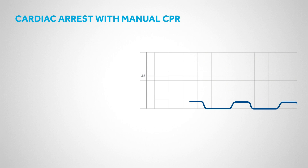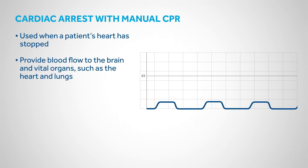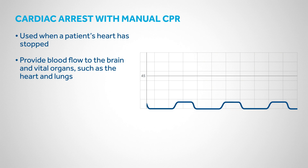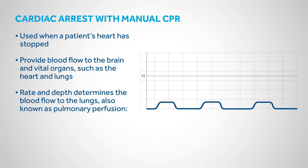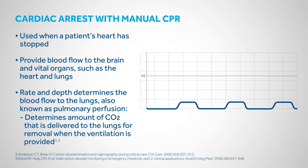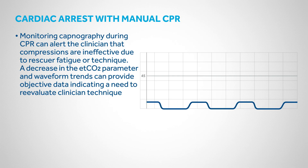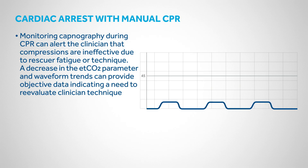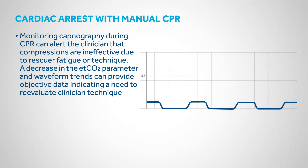Chest compressions are used when a patient's heart has stopped. The goal is to provide blood flow to the brain and vital organs. The rate and depth of chest compressions determines pulmonary perfusion, which in turn determines the amount of CO2 delivered to the lungs for removal during ventilation. Monitoring capnography during CPR can alert the clinician that compressions are ineffective due to rescuer fatigue or technique. A decrease in end-tidal CO2 parameter and waveform trends can provide objective data indicating a need to re-evaluate clinician technique.